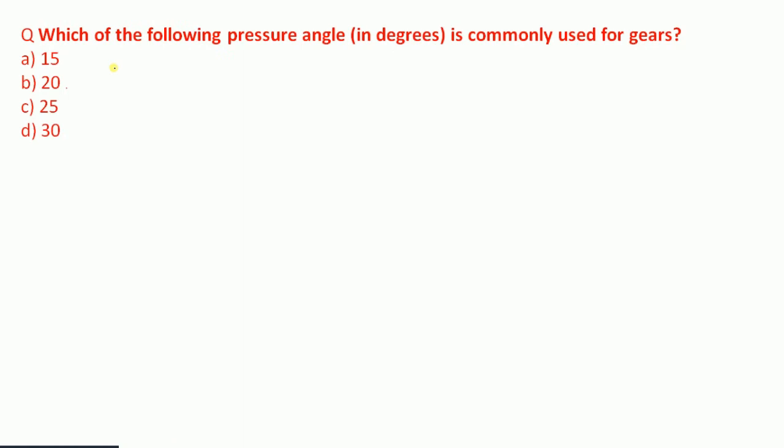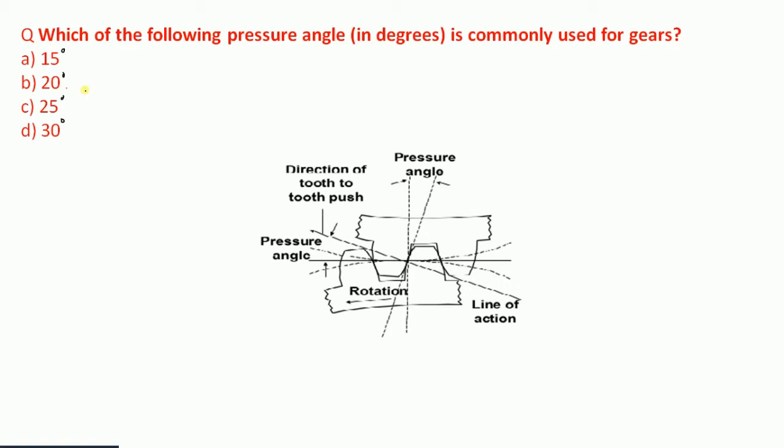Question 8: Which pressure angle in degrees is commonly used for gears — 15°, 20°, 25°, or 30°? The commonly used pressure angle is 20 degrees. The pressure angle is the angle made at the point of contact between the common tangent to the pitch circles and the common normal at that point.